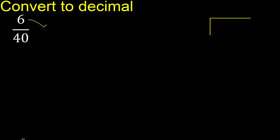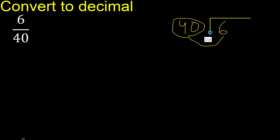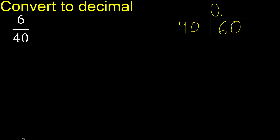6 divided by 40. 6 is less than 40, therefore complete — always complete with 0. Here, 60 is not less than 40.